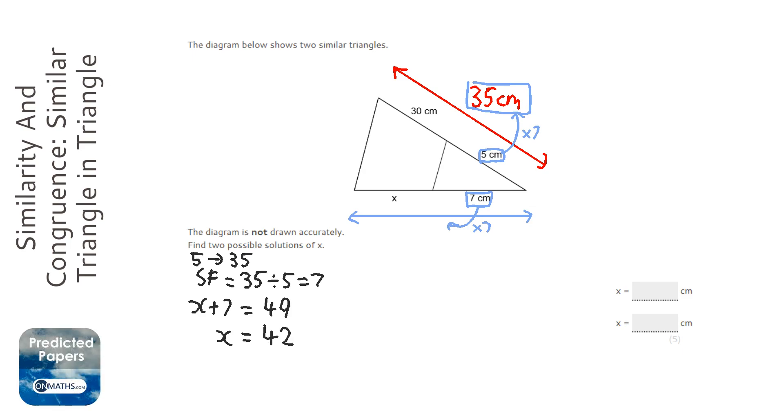However, it does say there's two possible solutions. One of the flaws that we've made is that we've assumed that the five corresponds with the 35, that this length here corresponds with the total length here.